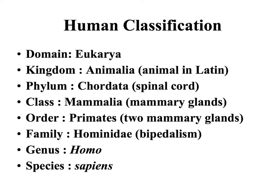Here's another example classifying our own species. Humans are in the domain Eukarya because we have eukaryotic cells, and the kingdom Animalia because we are animals. The phylum Chordata because we have a spinal cord, and class Mammalia because humans have mammary glands. Order Primates, which are mammals that have two mammary glands. Family Hominidae, which means we are bipedal — walking on two legs. Humans are in the genus Homo and the species Homo sapiens.